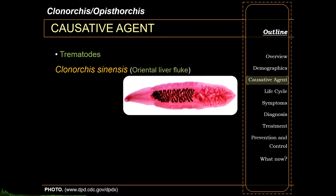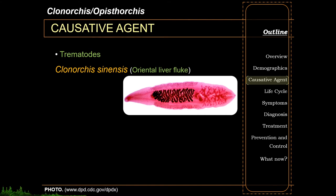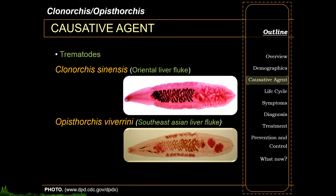Clonorchis and Opisthorchis are both trematodes. The more common Clonorchis species is Clonorchis sinensis, or the oriental liver fluke. The Clonorchis adult is around 1 to 2.5 centimeters long and around half a centimeter wide, which is quite smaller than your Fasciola adult. A little bit smaller is Opisthorchis viverini, or the southeast Asian liver fluke, around a little over half the size of the oriental liver fluke.